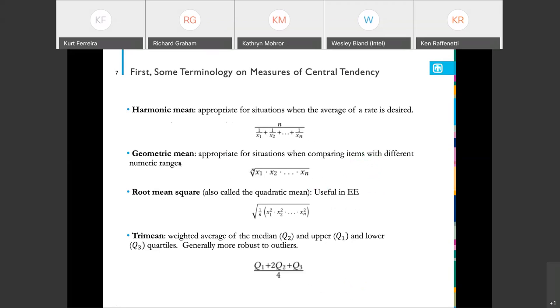We're also going to be looking at a number of variants on the arithmetic mean. The first is the harmonic mean. Generally the harmonic mean is used in situations when you're looking for an average rate. There's a geometric mean, generally appropriate for situations when you're comparing items with different numeric ranges. It can sort of normalize that range for you. There's a root mean square, which is also called a quadratic mean, generally used in electrical engineering.